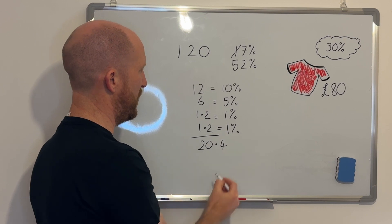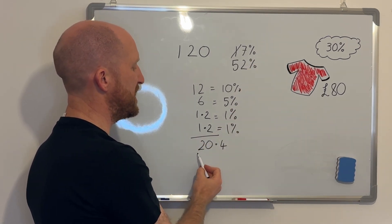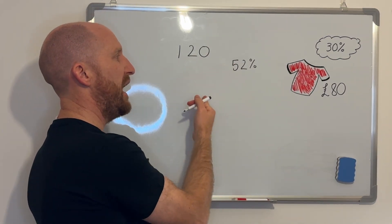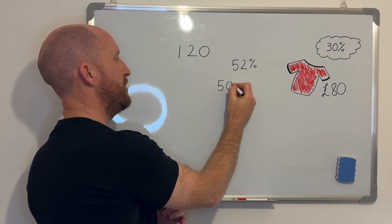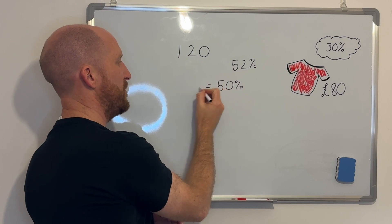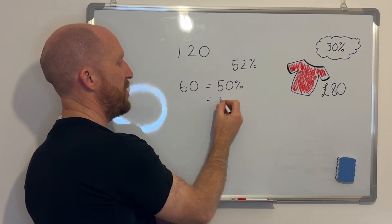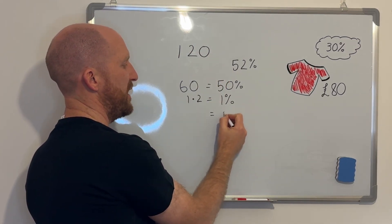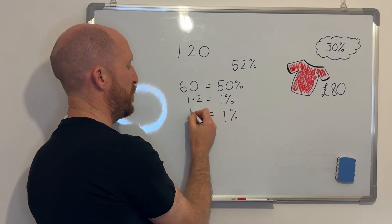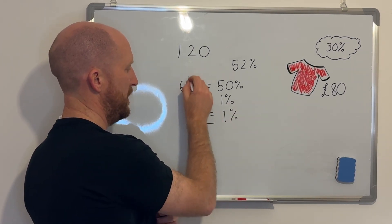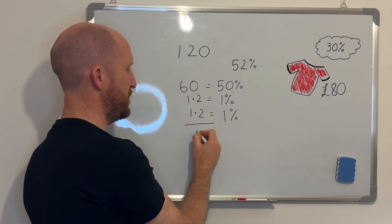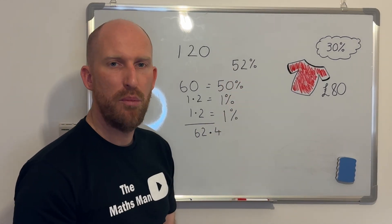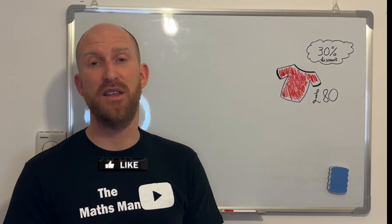Adding 12, 6, 1.2, and 1.2 together gives 20.4, so 17% of 120 is 20.4. Now for 52% of 120: I half the number to find 50%, which is 60. Then I find 1%, which is 1.2, and another 1%, which is another 1.2. Adding those together gives 62.4, so 52% of 120 is 62.4.